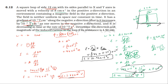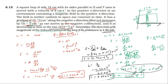Current equals EMF divided by resistance. EMF is 12.96 into 10 power minus 5 volt, divided by resistance 4.5 milli ohm, which is 4.5 into 10 power minus 3 ohm. The current equals 2.88 into 10 power minus 2 ampere. Now the magnitude of the induced current is found; next we determine its direction.